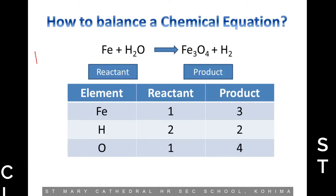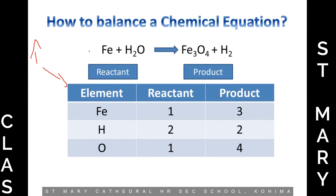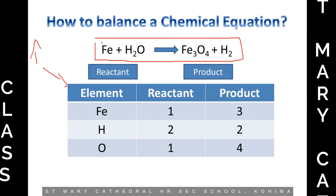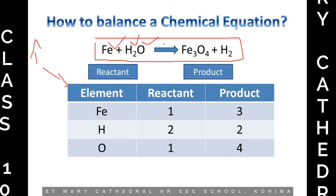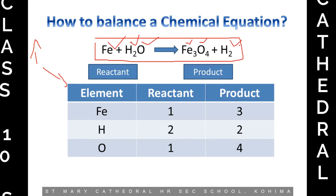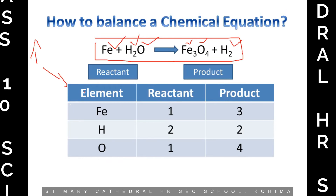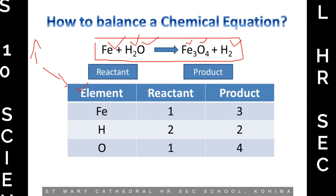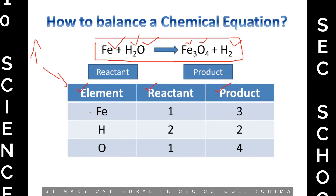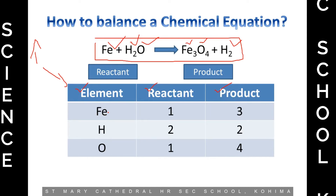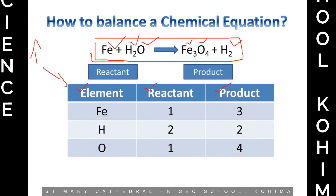If you find the previous method difficult, you can follow this one where you make a table. In our example, we have three chemicals: iron, hydrogen, and oxygen. Even after they have reacted, you still have these three chemicals. The first column will be your element, the second column your reactant, and the third column your product. In the first column, write the elements present: iron, hydrogen, oxygen.